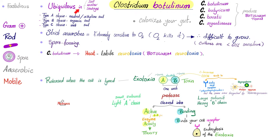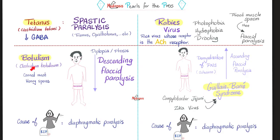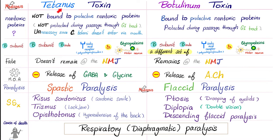Clostridium botulinum is ubiquitous — found in soil, water, and sewage. There are four Clostridia that produce the same botulinum neurotoxin. That botulinum neurotoxin is very heat labile; just by cooking your food for 10 minutes, you will destroy the most potent toxin on the face of the planet. Botulinum toxin causes descending flaccid paralysis by preventing the release of acetylcholine from presynaptic neurons at the neuromuscular junction, unlike Clostridium tetani, which inhibits GABA, causing spastic paralysis.